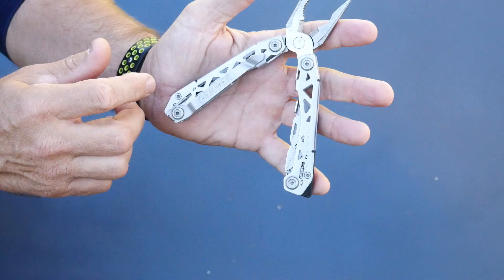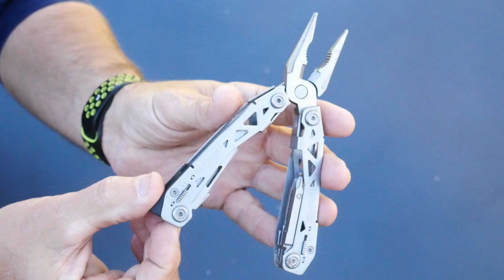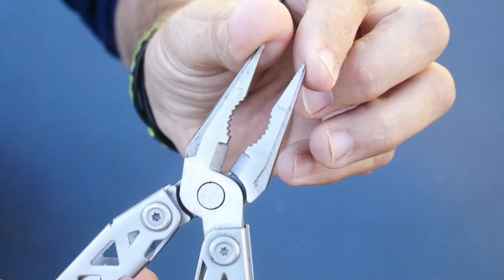You can see it's spring loaded. These are needle nose at the tip, and these are standard pliers in the middle with a cutter. So there's three tools just in the ends right here.